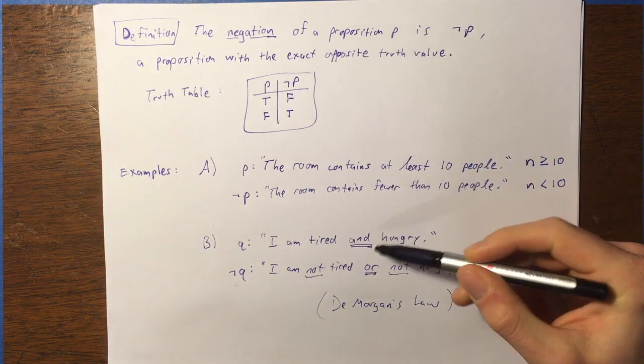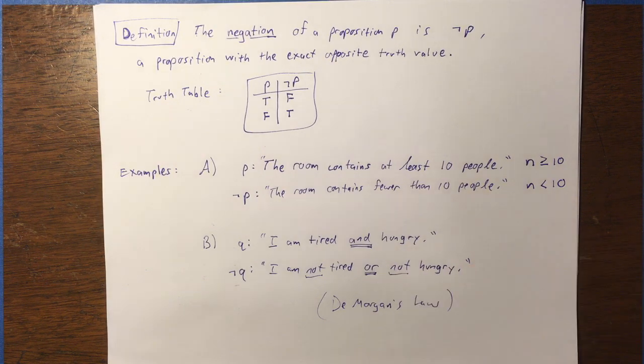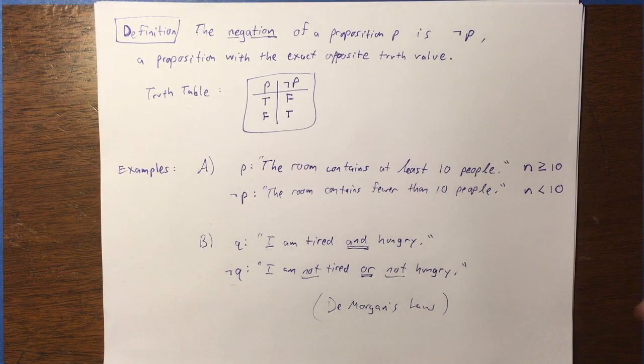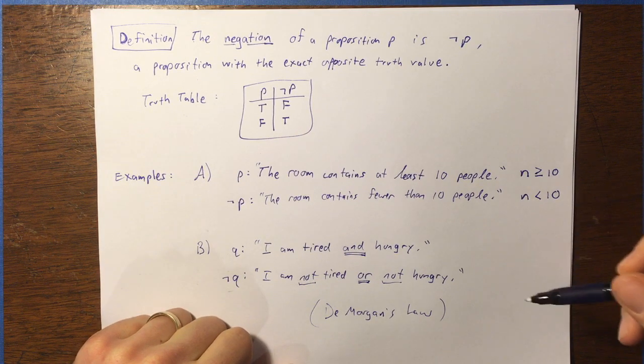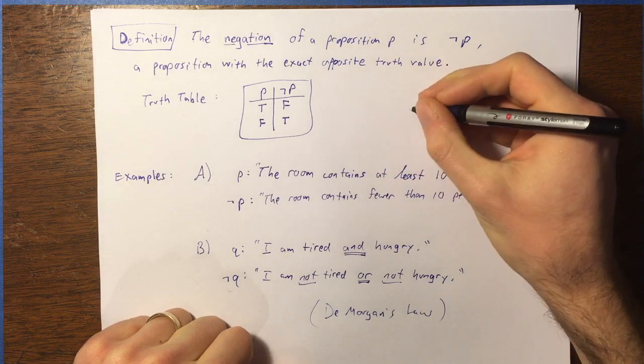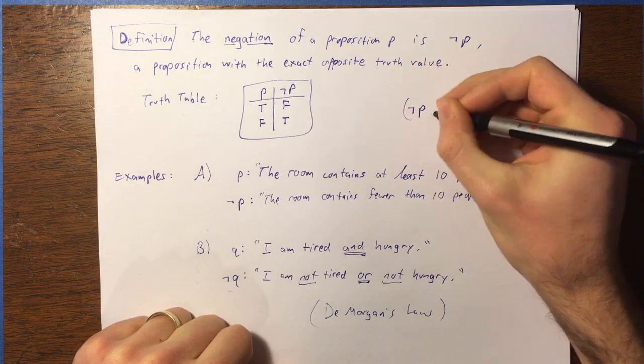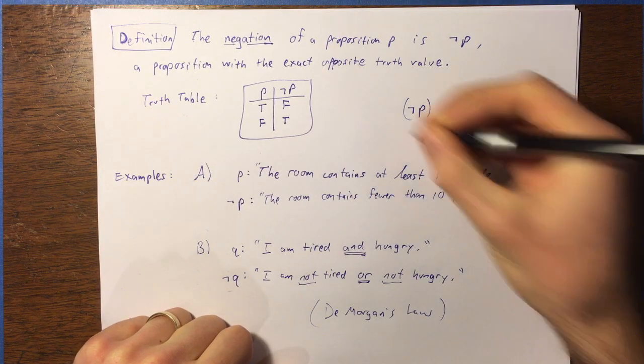And also, we're going to discuss the operations and and or in the next video. One more thing I want to mention before we move on here is that this negation operation is self-inverting. So, that means that if you negate a proposition and then take the resulting proposition and then negate that, you get the original proposition back again.